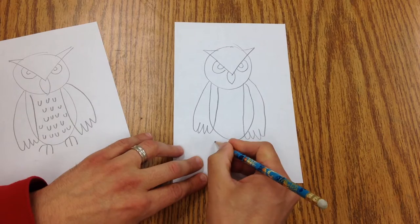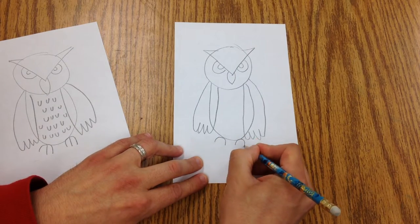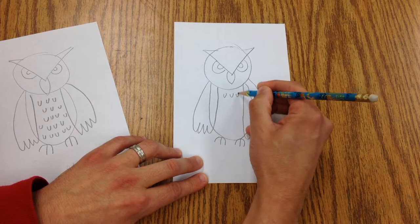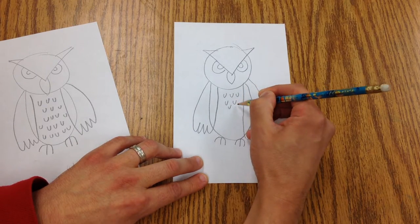And then we're going to make these little rainbow marks for the feet, and then U's for the feathers on the tummy.